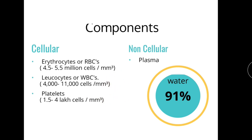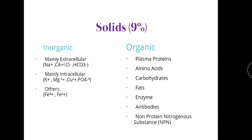The non-cellular component is plasma, of which 91% is water and the remaining 9% contains solids. Solids are of two types: inorganic and organic. Inorganic solids include sodium, calcium, chloride, and bicarbonate — mainly extracellular — and potassium, magnesium, copper, phosphate — mainly intracellular — as well as iron. Organic solids include plasma proteins, amino acids, carbohydrates, fats, enzymes, antibodies, and non-protein nitrogenous substances such as ammonia, creatine, and creatinine.